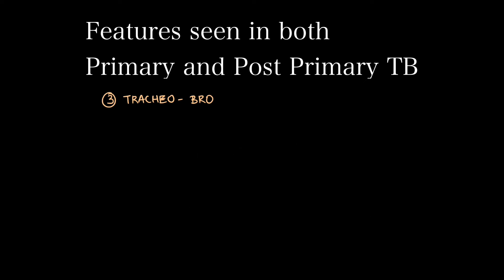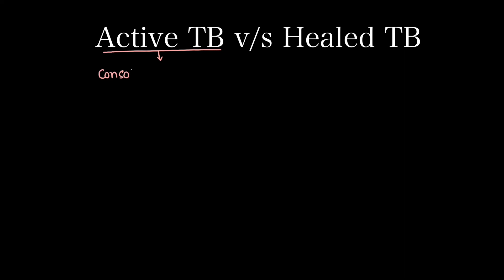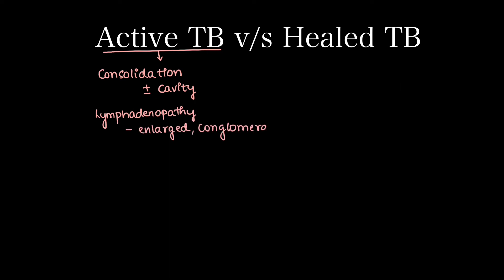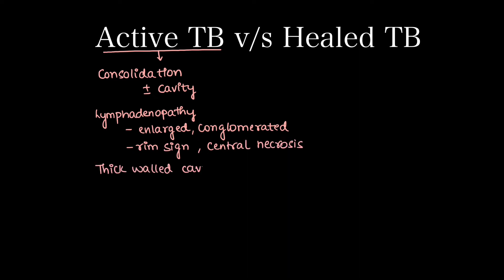The most important part: how to differentiate active versus healed tuberculosis. Active tuberculosis shows features like consolidation with or without cavity, lymphadenopathy showing classic enlarged conglomerated nodes with rim sign and central necrosis, thick-walled cavity, effusion or empyema, and centrolobular nodules.